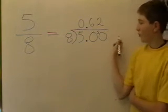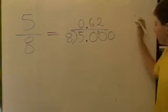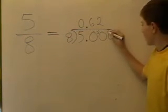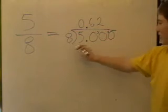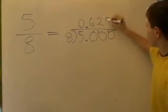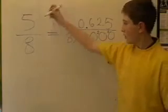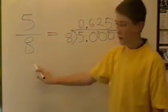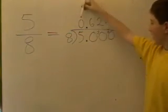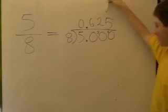And 8 into 20 goes 2 times with 4 left over. Since we have 4 left over, we need another zero. We add our 4 to the 0. So 8 into 40 goes 5 times. And that is our answer — 5 eighths is our proper fraction, and it is the same as our decimal fraction, 0.625.